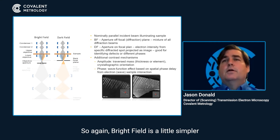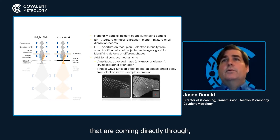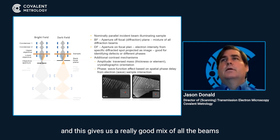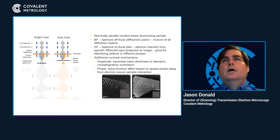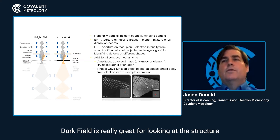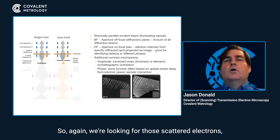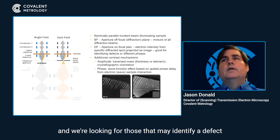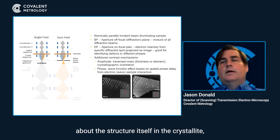Bright field is a little simpler — we're only looking at those electrons that are coming directly through. This gives us a really good mix of all the beams and allows us to have high contrast and good data. Dark field is really great for looking at the structure and looking for things that may be disassociated. We're looking for those scattered electrons that may identify a defect or a crystalline structure. We get great information about whether the structure itself is crystalline or not, or the diffraction.